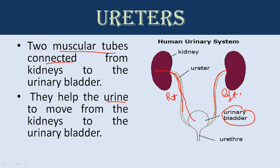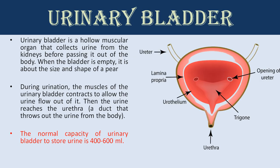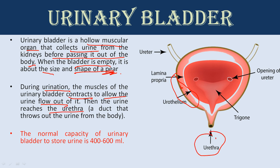The ureters help urine to move from the kidney to the urinary bladder. The urinary bladder is a hollow muscular organ that collects urine from the kidney before passing it out of the body. When the bladder is empty, it is about the size and shape of a pear. During urination, the muscles of the urinary bladder contract to allow urine to flow out through the urethra. Urethra is a duct that expels urine from our body. The normal capacity of the urinary bladder to store urine is about 400 to 600 ml.